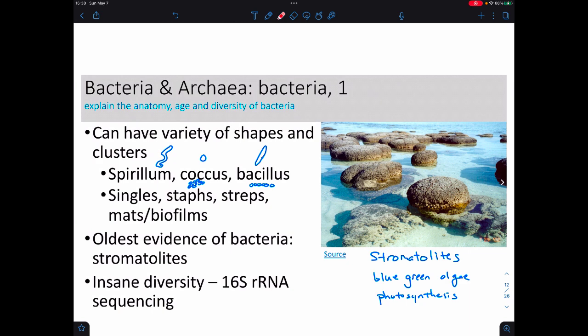When we look at them, especially the bacteria, they have a variety of shapes and clustering forms. In terms of shapes, they can be what's called spirillum, a coccus, or a bacillus—so spiral, a sphere, or a rod. They can show up in singles or as doubles like what we would call a diplococcus. They can show up as staphs, which are clusters, or streps, which are chains. They can also form mats, and then if you add some membranes to it, biofilms. So like you get biofilms on your teeth when you're starting to get a cavity. The oldest evidence of bacteria, pushing that 3.6 billion year marker, are things that we call the stromatolites. These are present-day stromatolites. These are bacteria that are capable of photosynthesis, and when we look at them there's a massive set of diversity amongst bacteria. We know this through sequencing something called the 16S rRNA, which is a component of the ribosome.